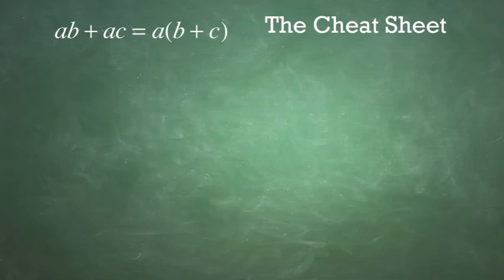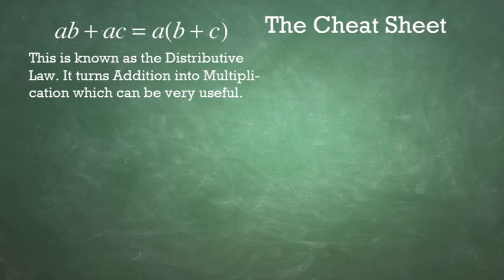Cheat Sheet 1: AB plus AC equals A times B plus C. This is known as the distributive law. The distributive law turns addition AB plus AC into multiplication A times B plus C, which can be very useful.